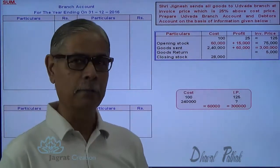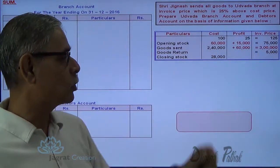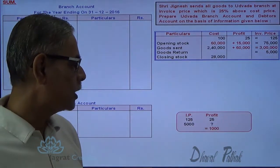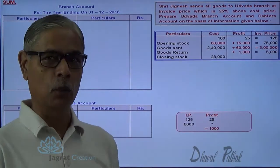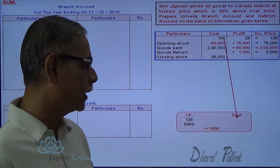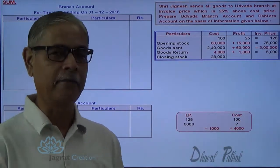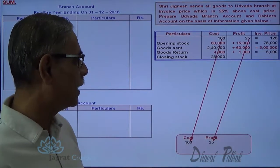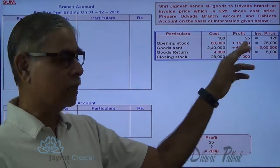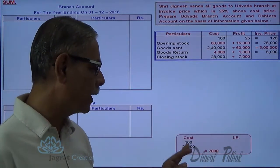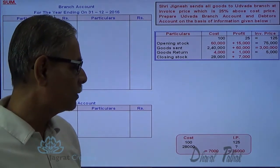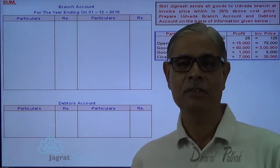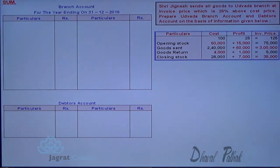Now I want to find out the missing information for goods return. Here I will start with 125 is to 25. How much for 5,000? Because this 5,000 is the invoice price, so I should start with invoice price - it is 1,000. 5,000 minus 1,000 is equal to 4,000. Alternatively, 125 is to 100 cost, how much for 5,000 - 4,000. For closing stock of 28,000, if cost is 100, then profit is 25, so how much for 28,000 - it should be 7,000. 28,000 plus 7,000 gives invoice price of 35,000. This is how I have prepared this working note. The important point of emphasis: cost to branch means invoice price. Now let me write all these things in the branch account.